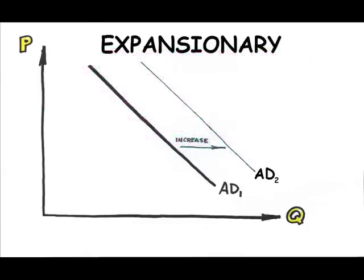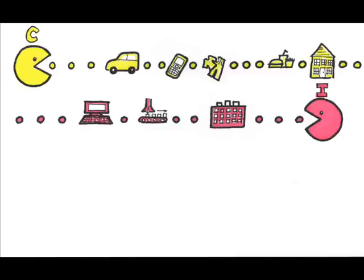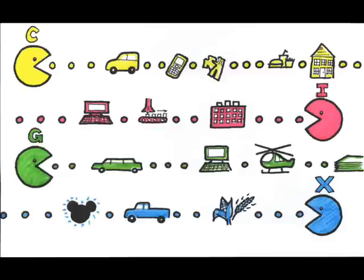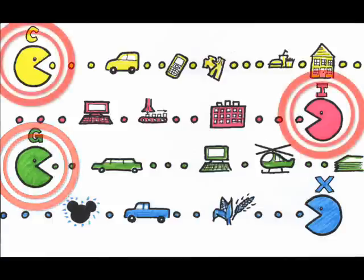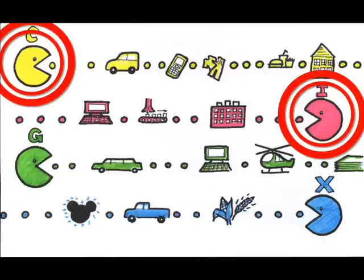Since aggregate demand is composed of consumption, investment, government spending, and net exports, an increase in government spending has a direct, immediate effect on aggregate demand. A tax cut, which will encourage spending on the part of households and businesses, has an indirect effect on aggregate demand as consumption and investment rise.